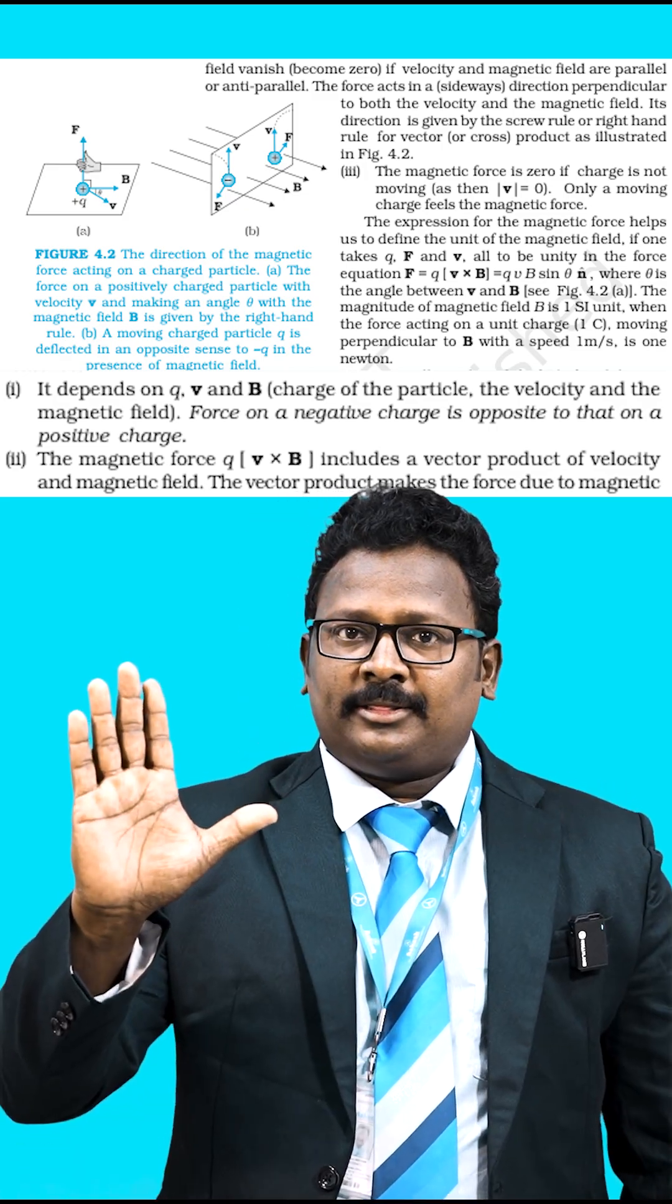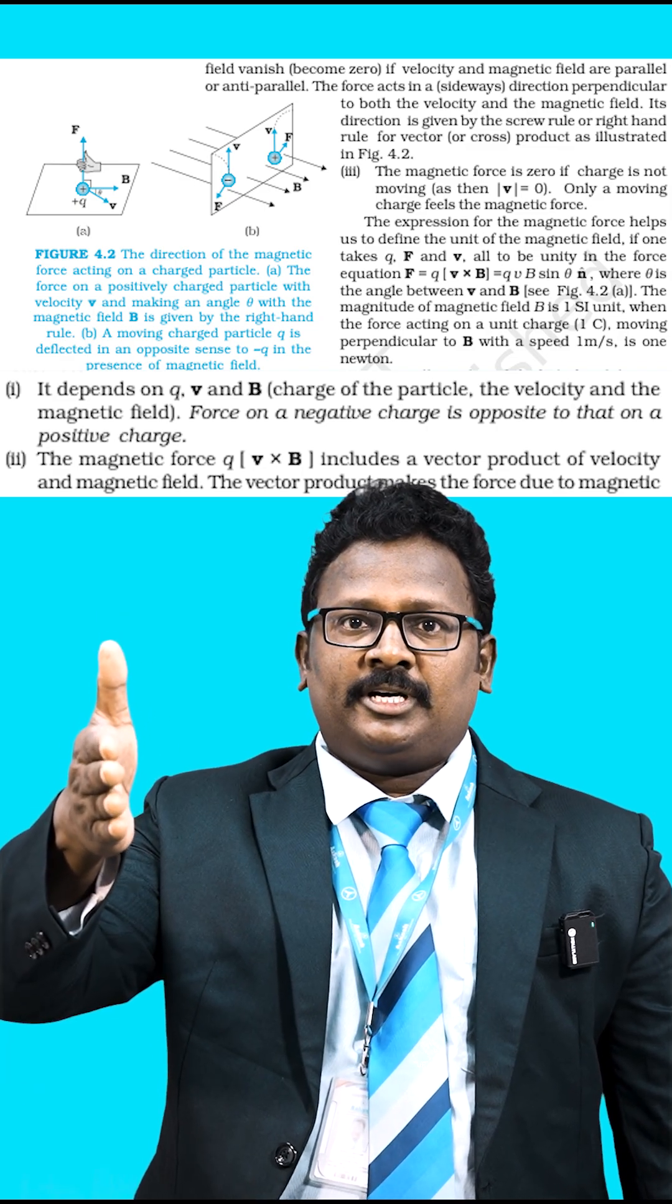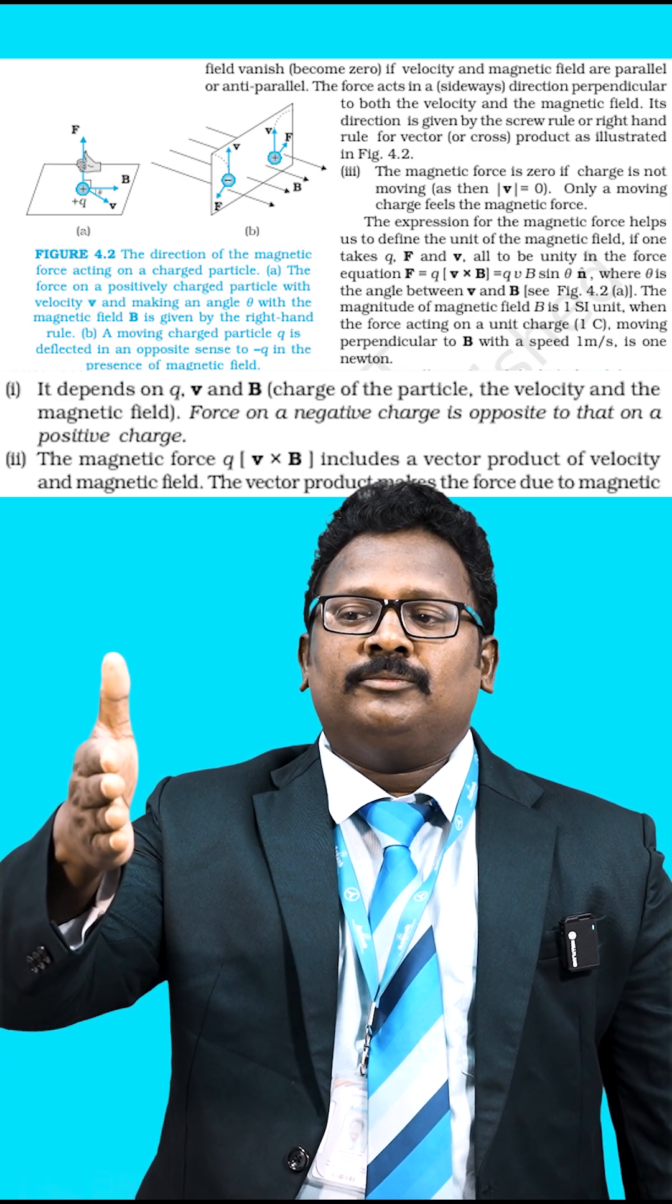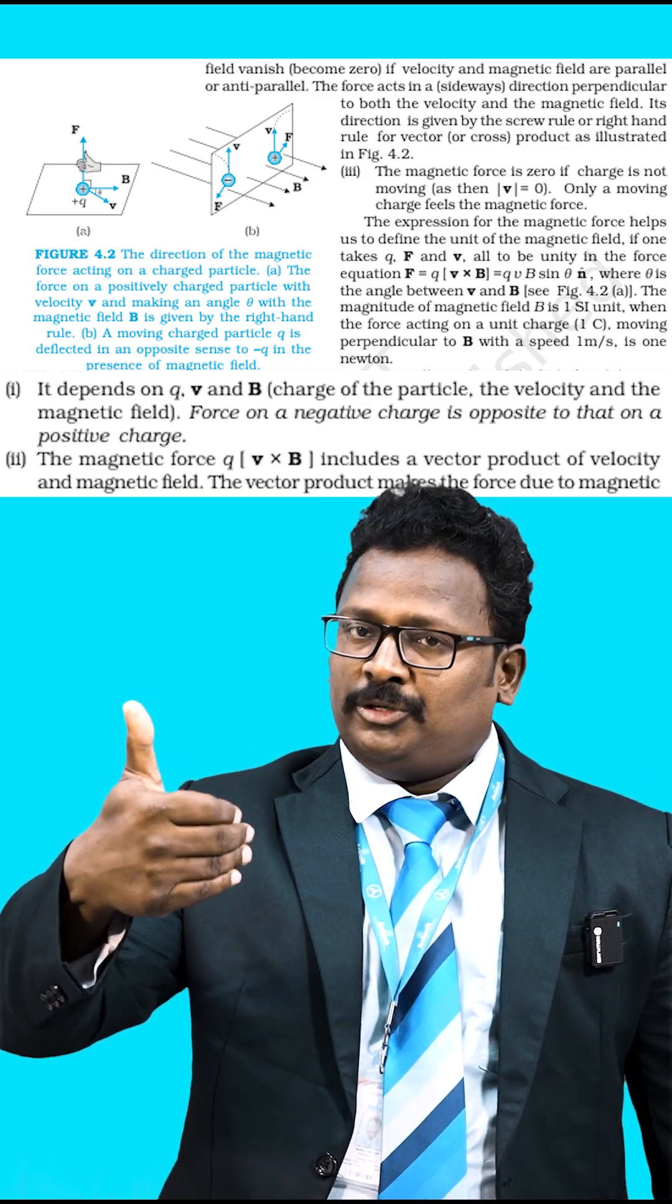For the right hand thumb rule, point your four fingers in the direction of velocity of the charge, then curl your fingers from velocity to magnetic field direction. Your thumb gives the direction of force on positive charge.